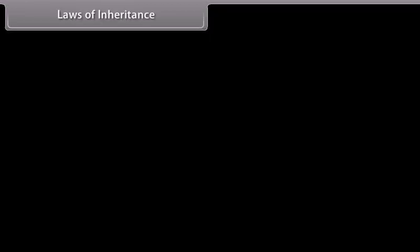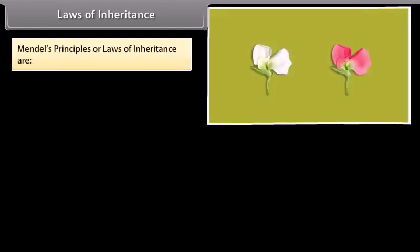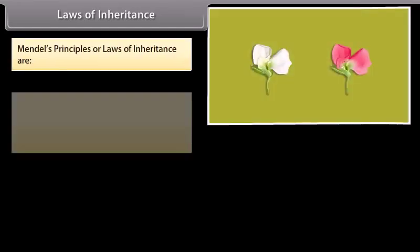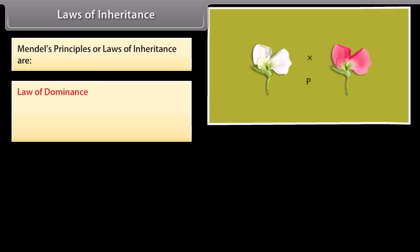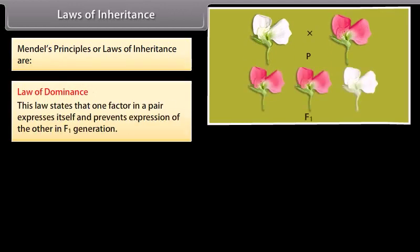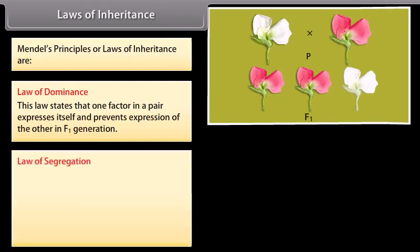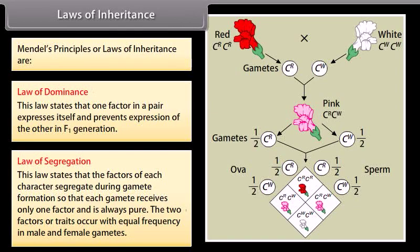Laws of inheritance. Mendel's principles or laws of inheritance are: Law of Dominance — one factor in a pair expresses itself and prevents expression of the other in the F1 generation. Law of Segregation — the factors of each character segregate during gamete formation so that each gamete receives only one factor and is always pure; the two factors occur with equal frequency in male and female gametes.